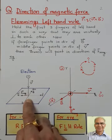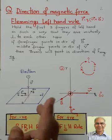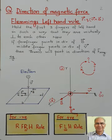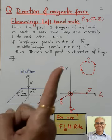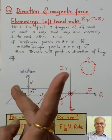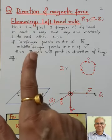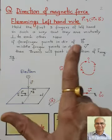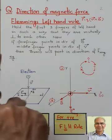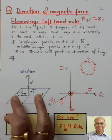Let us practice: an electron is moving downward, and the magnetic field here is from south to north. We need to find the direction of the magnetic force on this electron. First open one finger and point it in the direction of the magnetic field, then open the middle finger and orient it so that it shows the velocity vector going down. The direction of force will be to the left, so the electron will get deflected towards west.